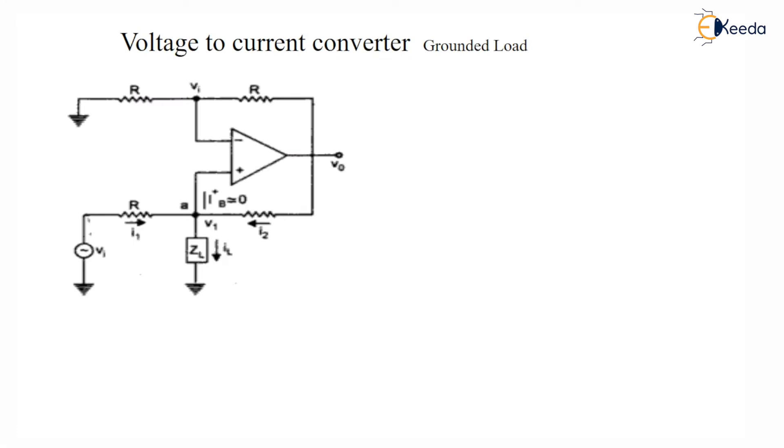In voltage to current converter, the input voltage is converted into current. This output current is in proportion with input voltage. In voltage to current converter, there are two types.